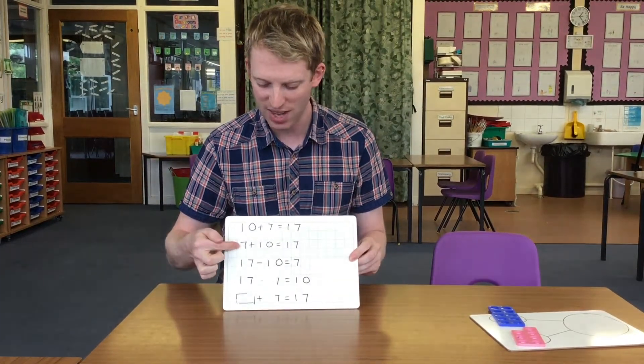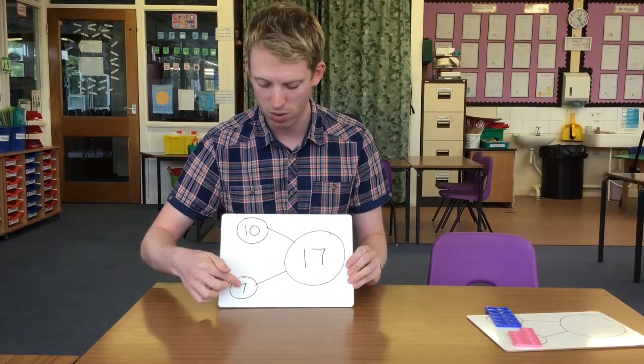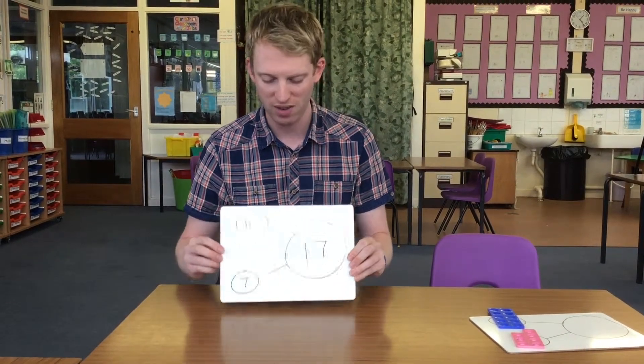And similarly we can do 7 add 10 equals 17, where we're looking just at the same model: 7 add the 10 to make the whole 17.